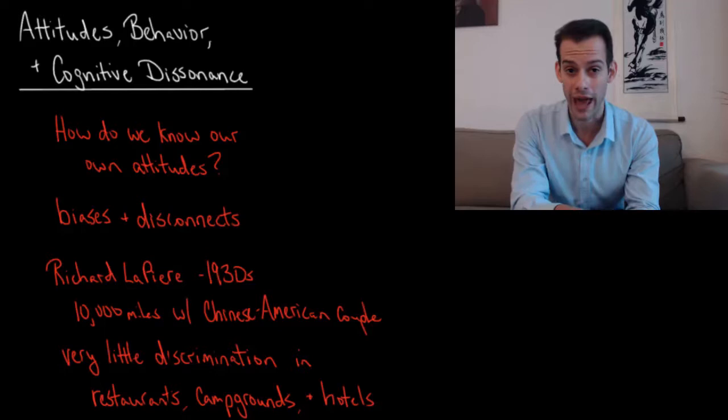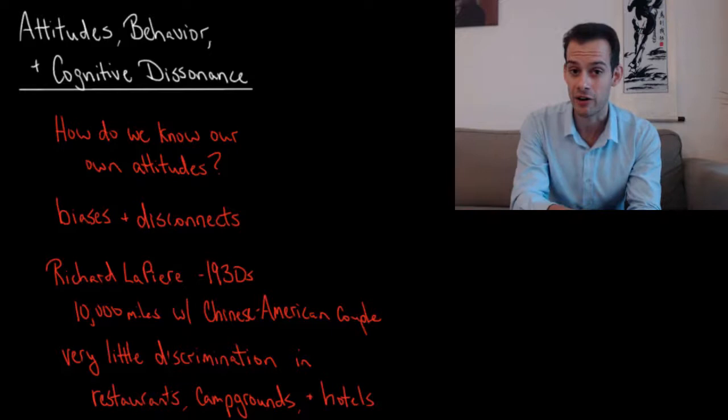So, how can we know our own attitudes, and how well can we know our own attitudes? If you've watched some of my previous videos, hopefully you've gotten the idea that there are a number of biases that can cloud our judgment, and this means that there's a potential disconnect between our attitudes and our behaviors.